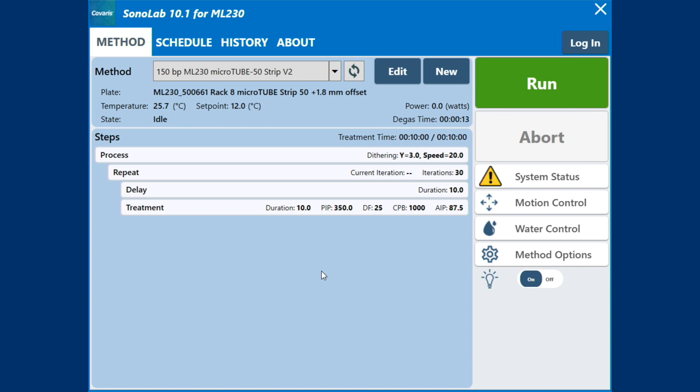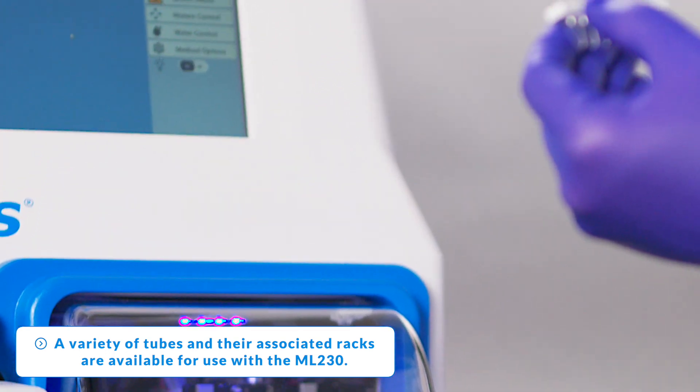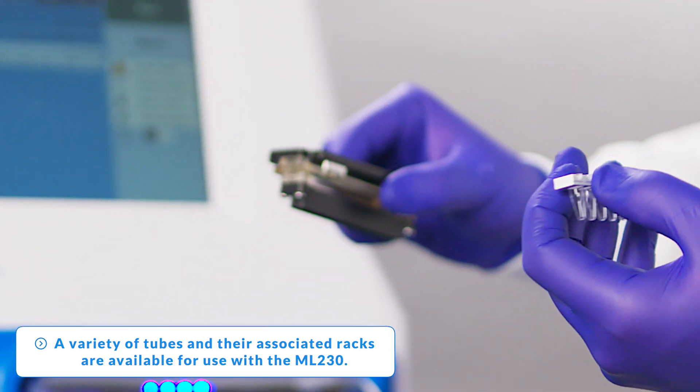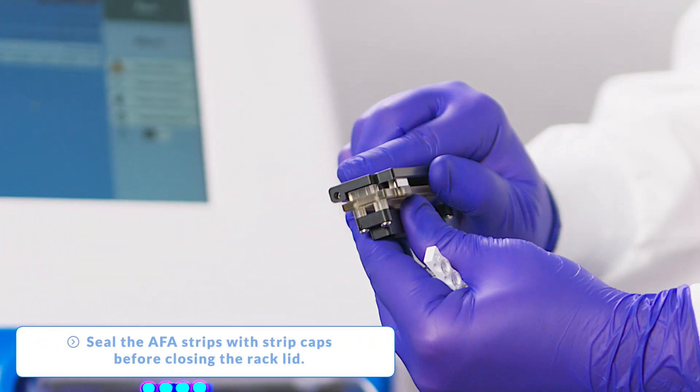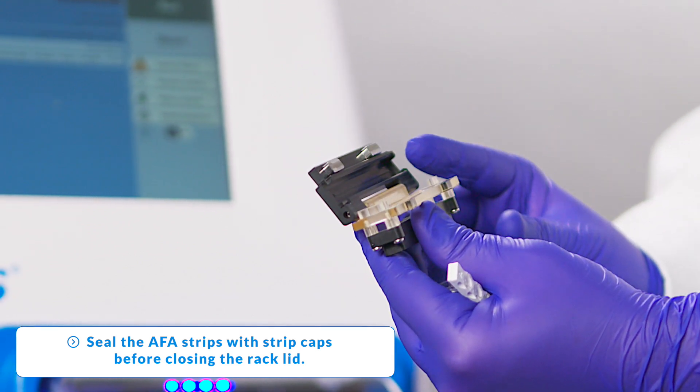Once a method has been selected, the proper rack and consumables must be in place on the ML230 sample tray. The AFA tube TPX strip, as an example, is fitted to its rack as a unit.